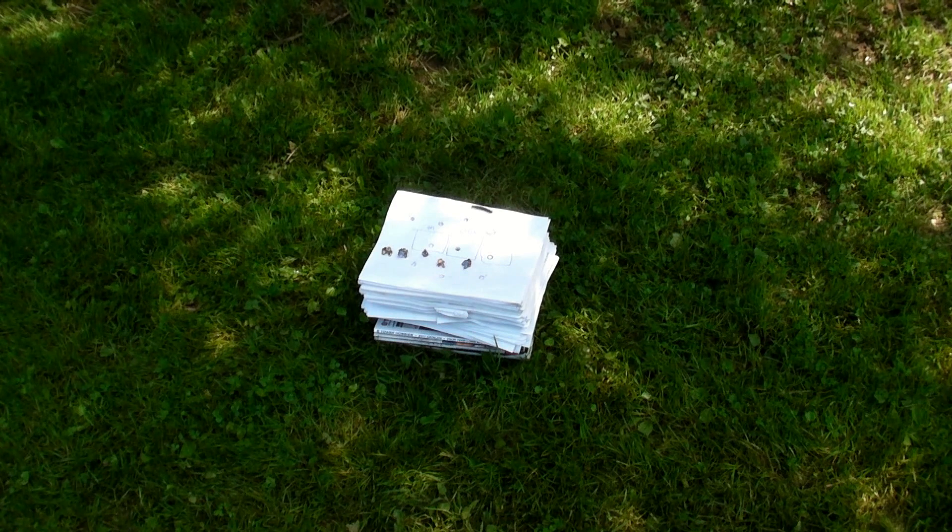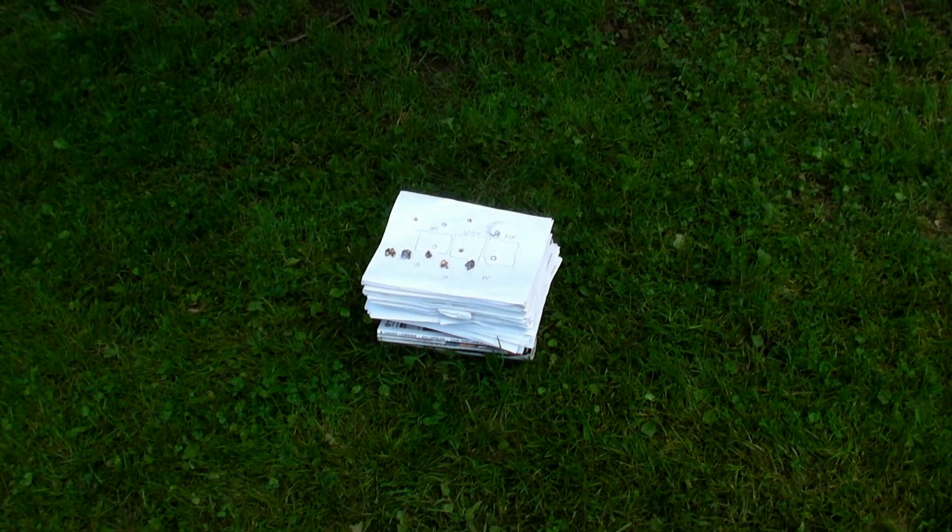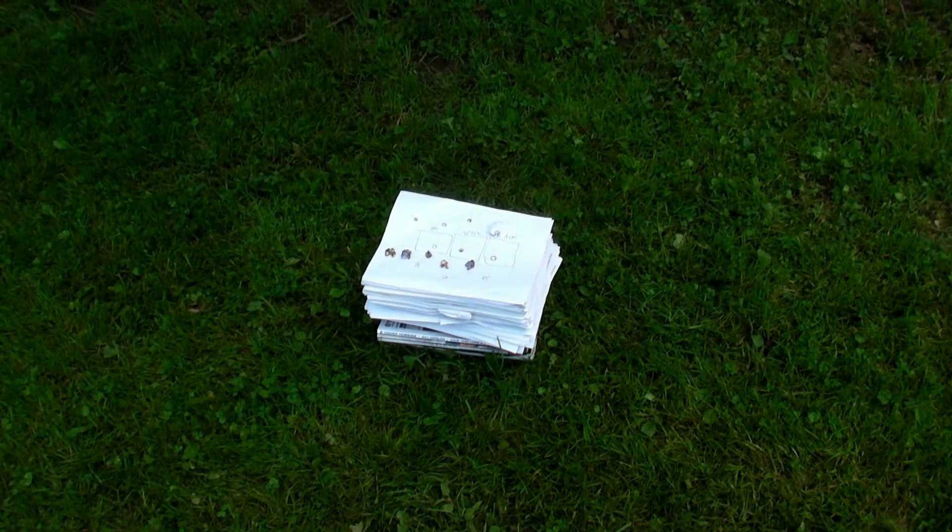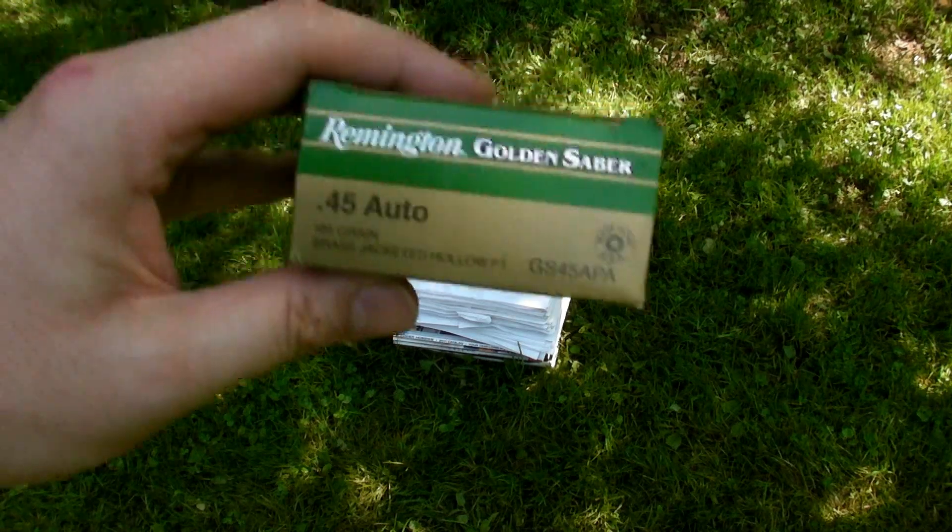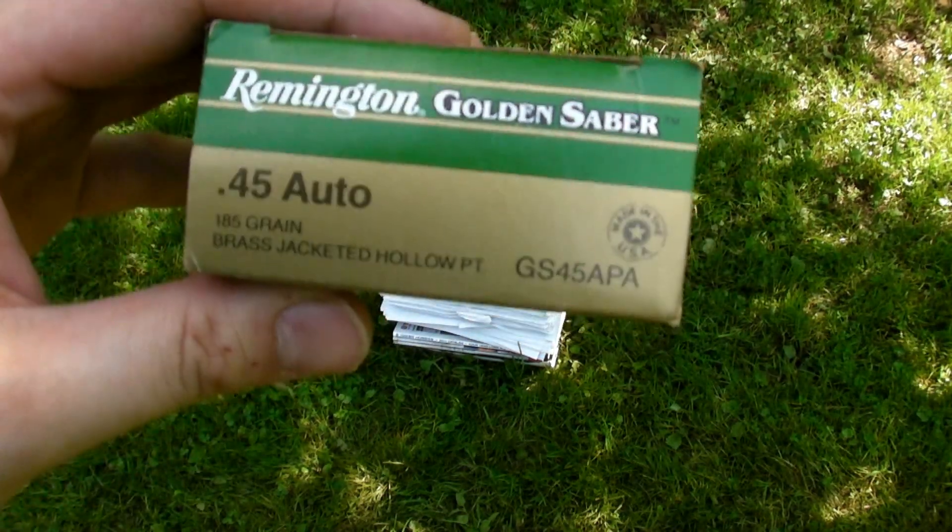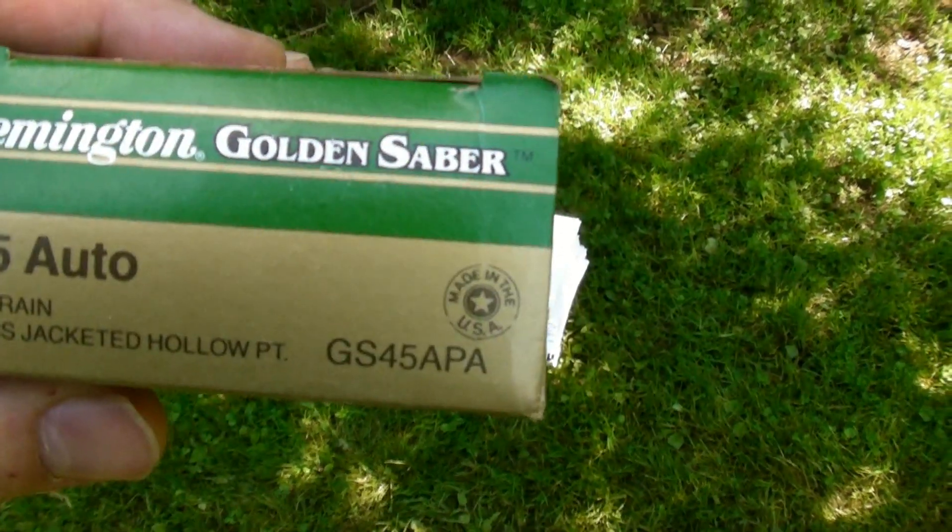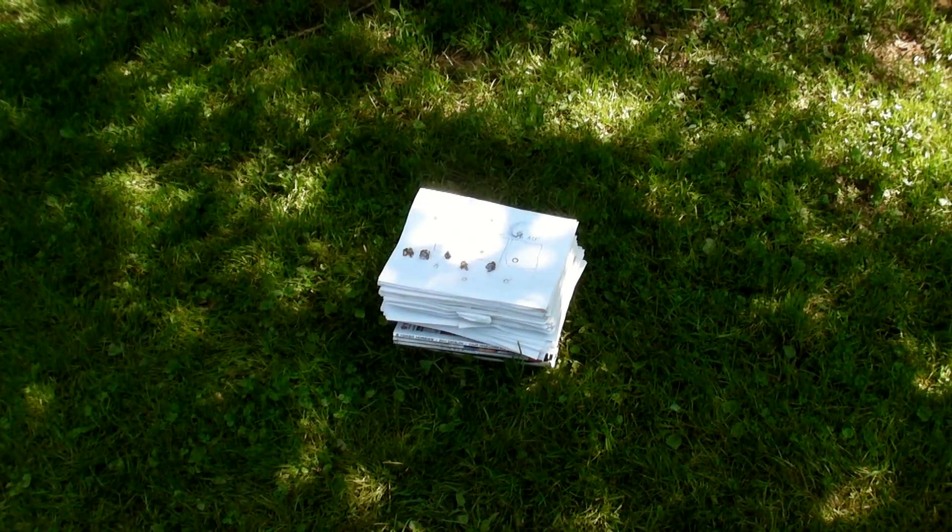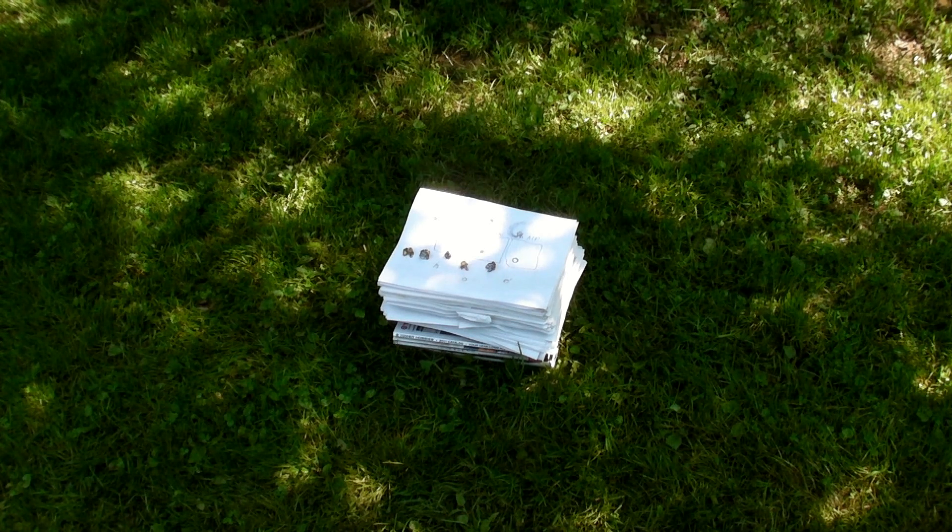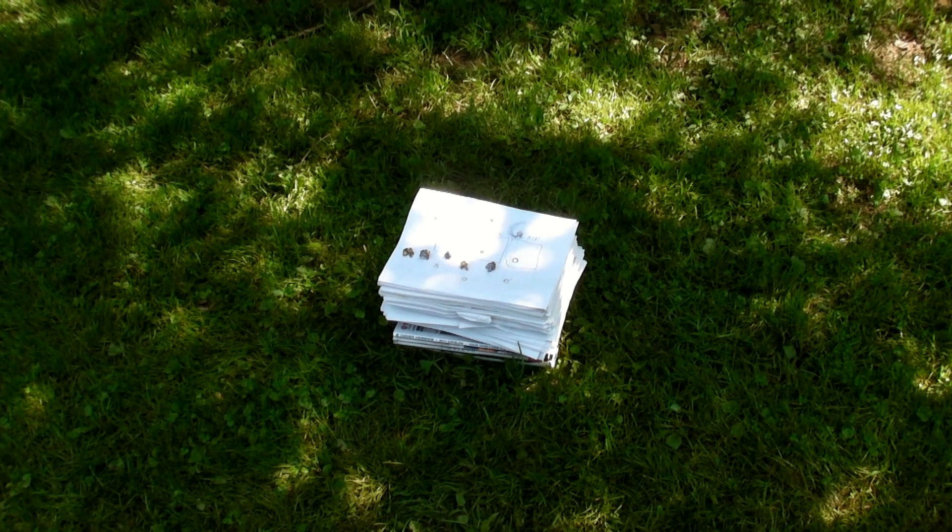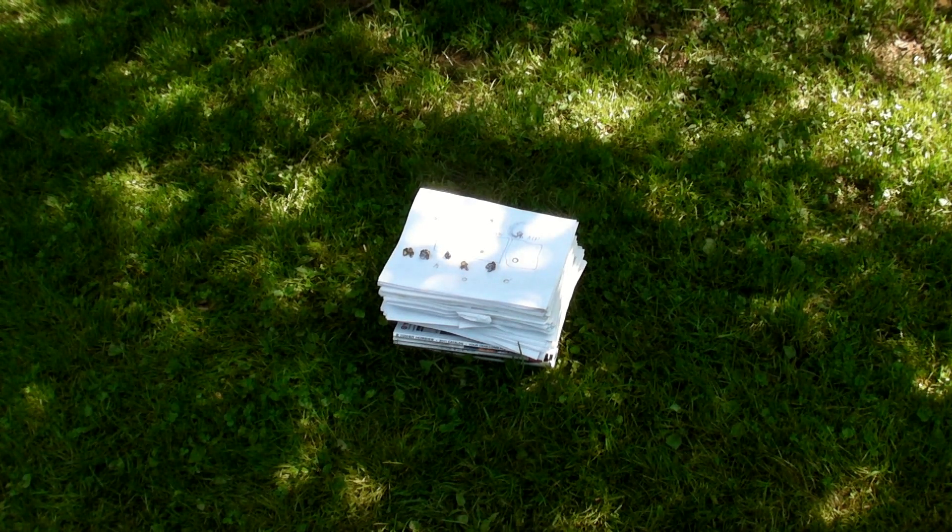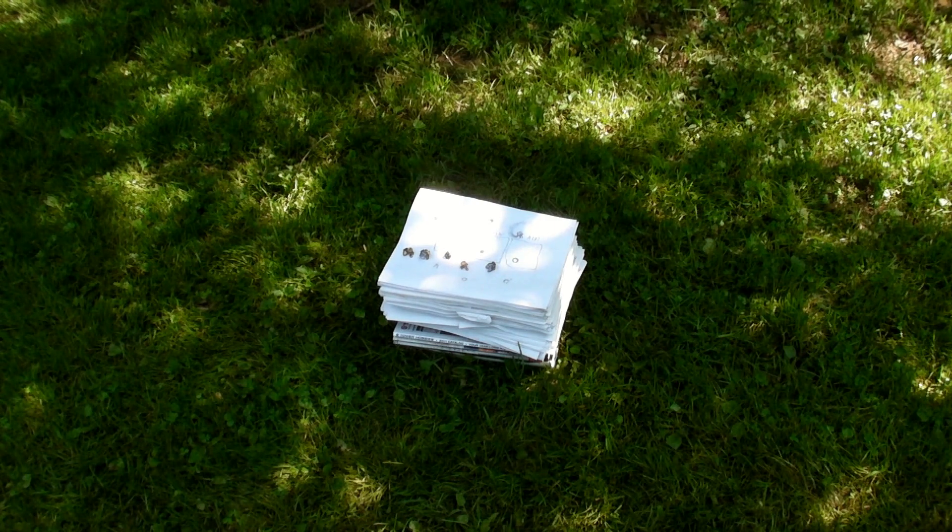Okay, so 349. Now the next round was the .45 ACP round. Okay, so the Remington Golden Saber .45, just standard .45 ACP ammo. And that's a 185 grain bullet traveling at 1015 feet per second from the muzzle, and it has about 423 foot-pounds of force at the muzzle.